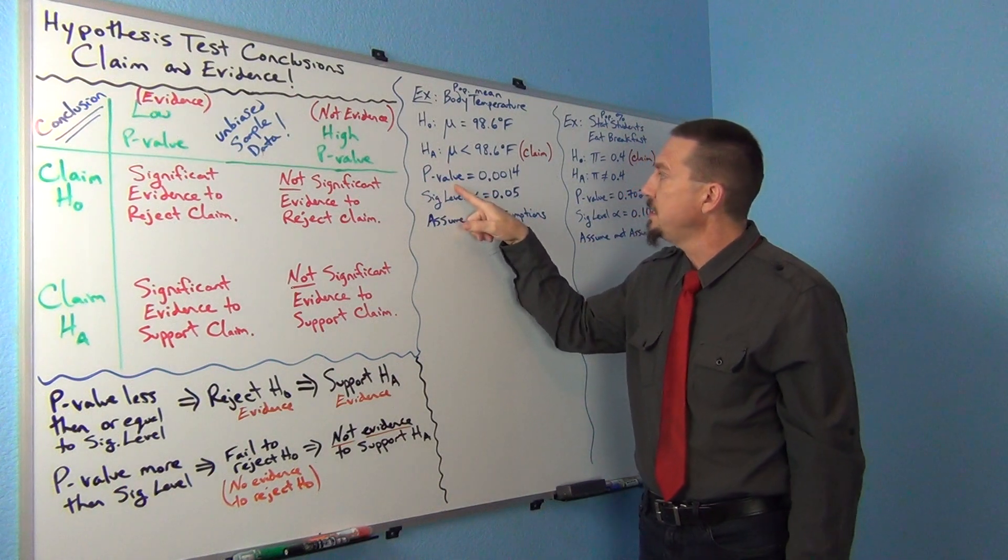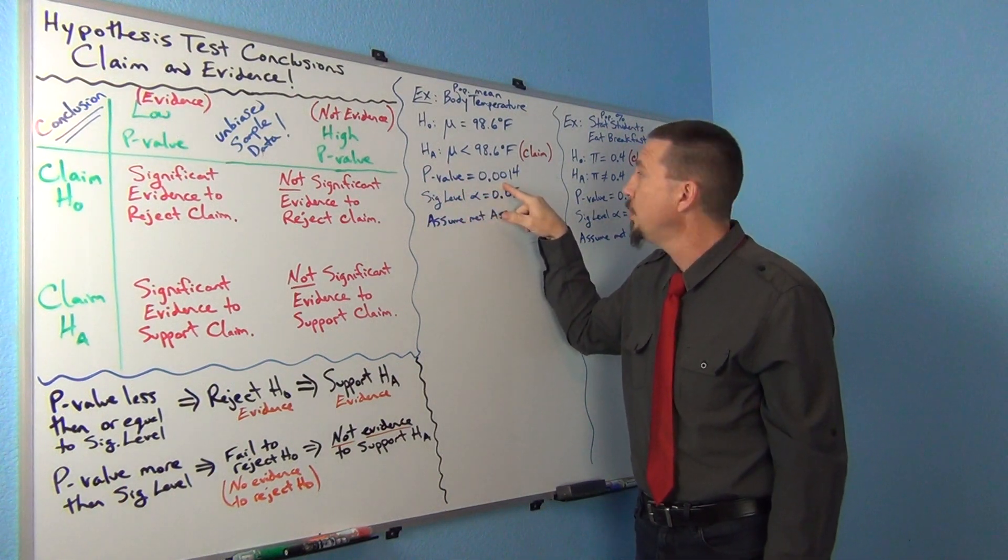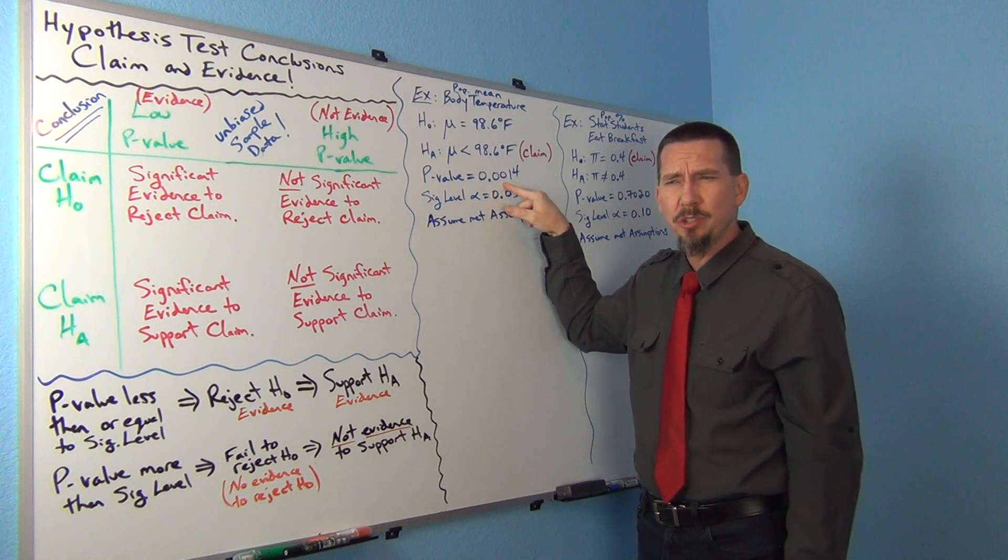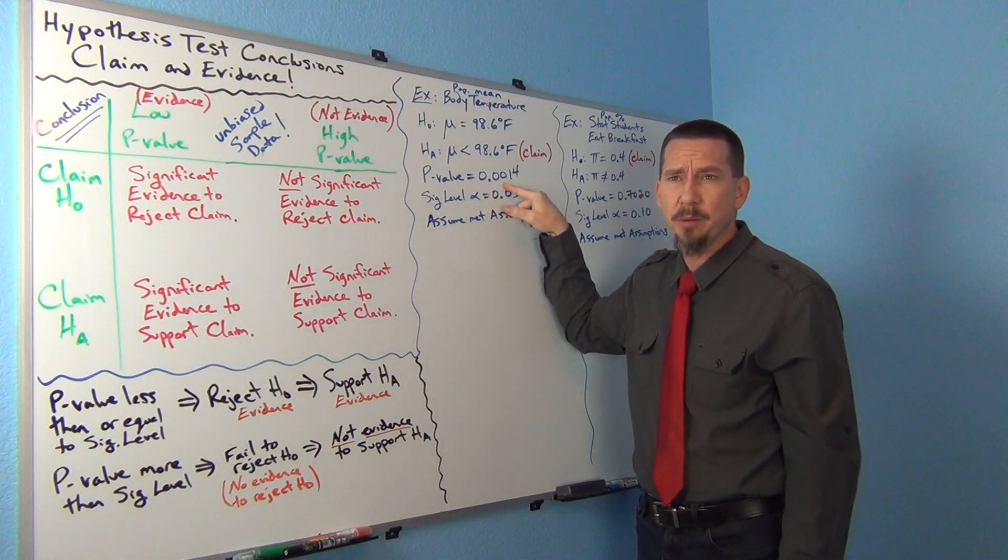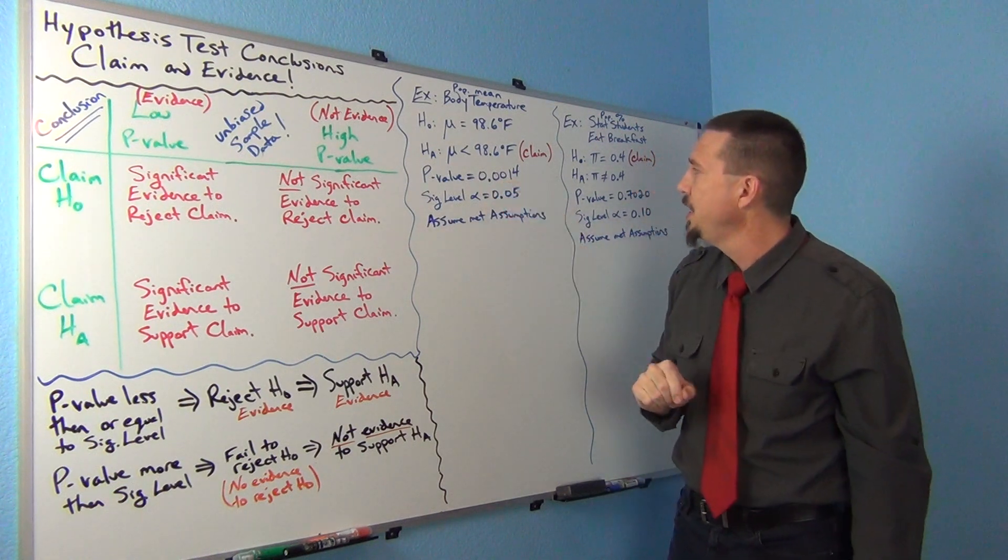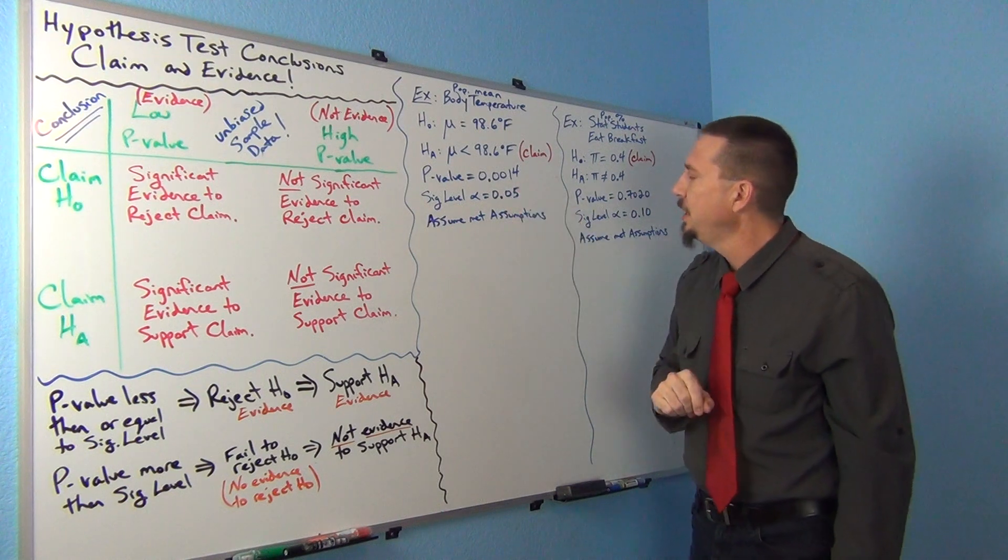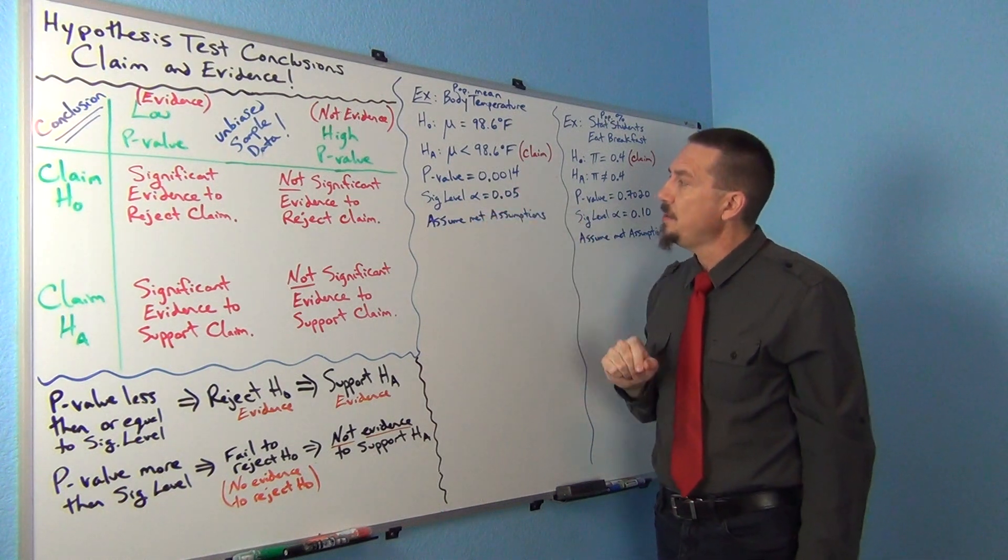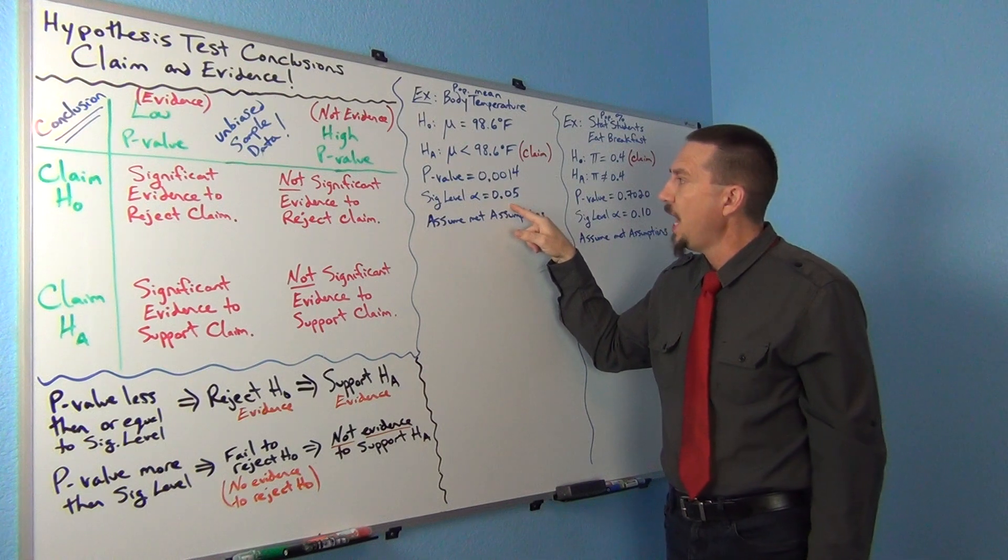So my p-value from this data was 0.0014. I think in the last video where I showed you calculating p-values with the computer, I kind of showed you how StatCato got that number.